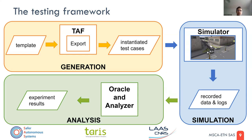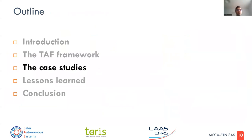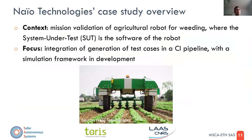This data is then analyzed by the oracle and analyzer to produce experimental results, and the results are used by the developers to see what went right and what went wrong. Regarding the two case studies — the first is a case study of an agricultural robot for weeding produced by NIO Technologies.